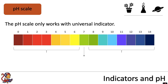Remember, the pH scale only works with universal indicator. When you add universal indicator, you can identify the acids in the range of pH 0 to pH 6, which will show colours from red through to orange through to yellow.